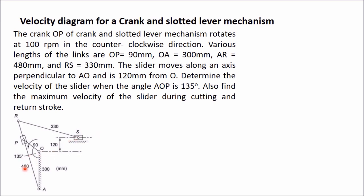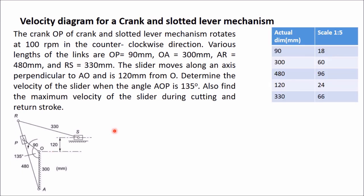With scale 1:10, this 480 mm would be drawn as 48 mm — a 4.8 cm line, so AR will be 4.8 cm. But OP, which is 90 mm, would become only 9 mm, which is very small. Therefore we will take scale 1 is to 5. I have prepared a table where all actual dimensions are written, and I have reduced all these dimensions by 5 times, so these are 1/5th of the actual lengths.